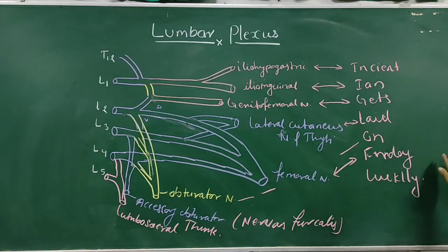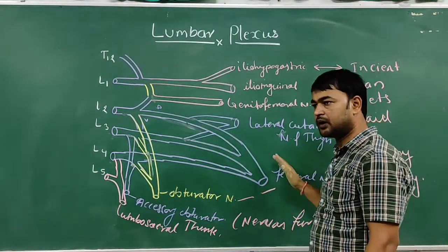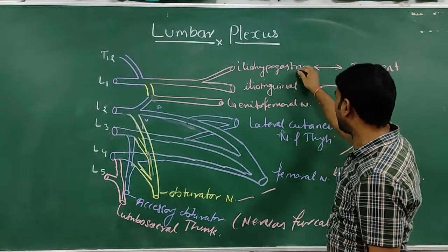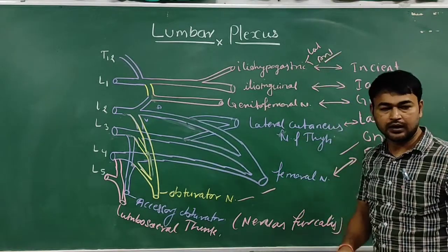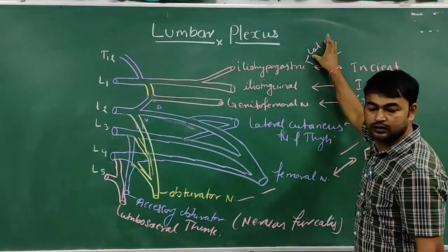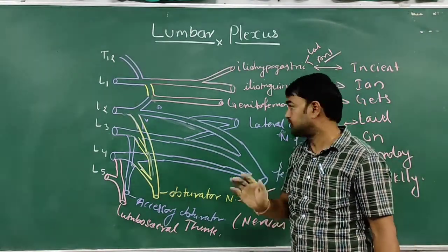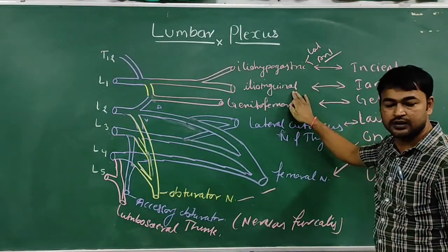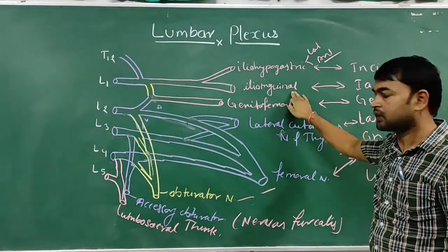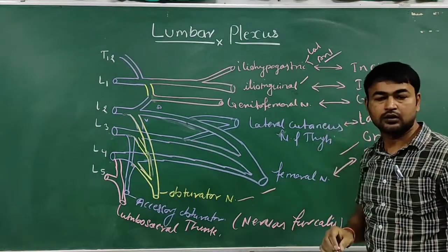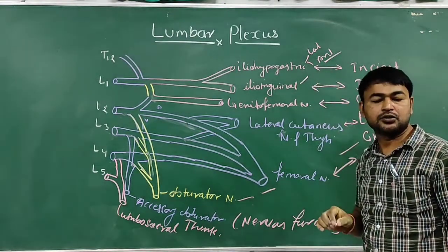This mnemonic helps remember the branches of the lumbar plexus. Now, regarding the supply: the iliohypogastric nerve gives two divisions — lateral division and anterior division. The lateral division supplies the gluteal region and the anterior division supplies the hypogastric region.